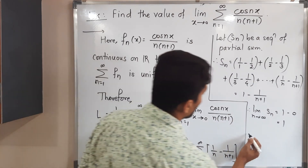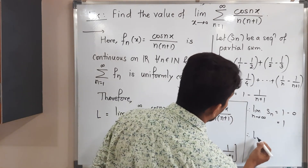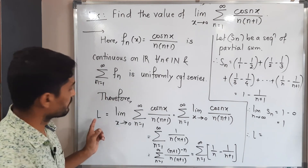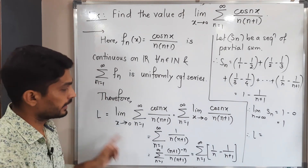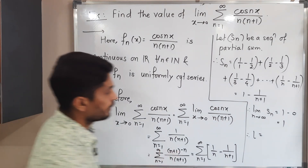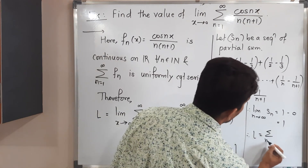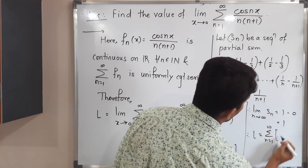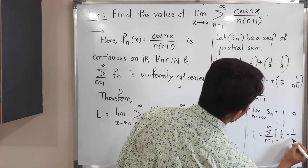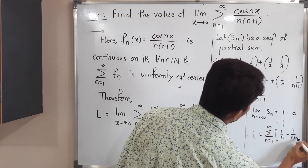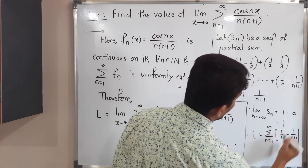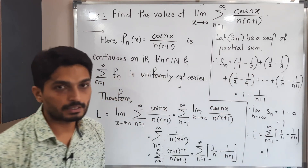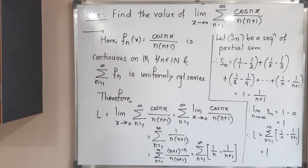Therefore, L is equal to the summation of [1/n − 1/(n+1)] from n = 1 to infinity, and we have got its value as 1. So the value of L is 1.